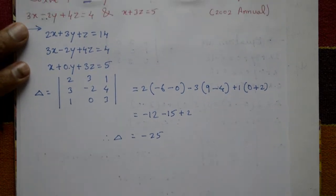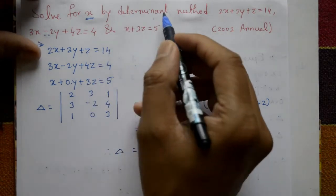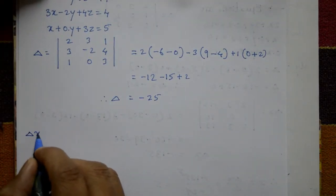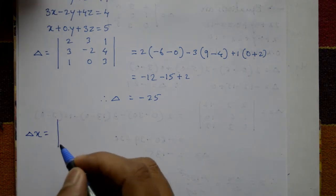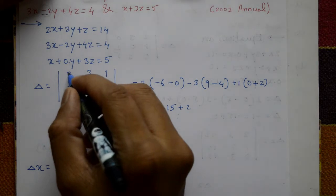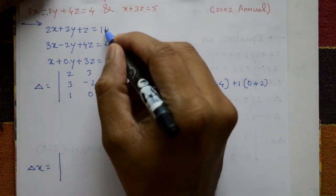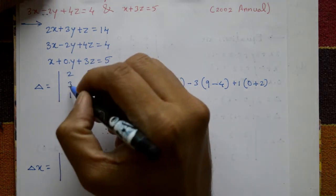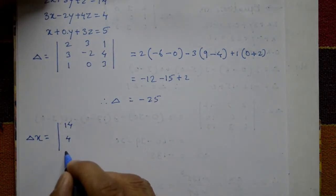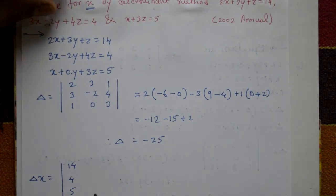Next, we need the x values by the determinant method. Take delta x. Delta x is a determinant where the first column is replaced by the constant terms: 14, 4, 5. The second and third columns remain as they are: 3, 1 and minus 2, 4 and 0, 3.